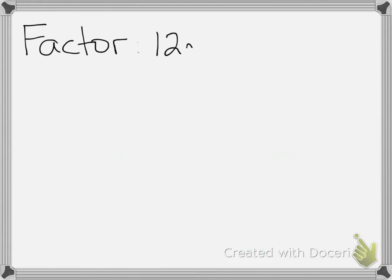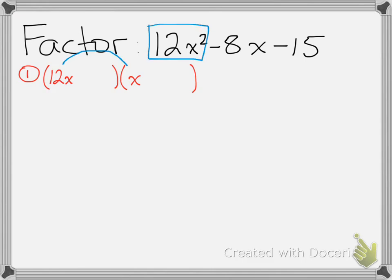So, for us to factor something like this, the way that we should approach factoring complex trinomials is we know that I need to break it into two factors. And I know that the first two things need to multiply to 12x squared. So, that times that has to give me 12x squared. That's not the only option. It might be 6x times 2x, it might be 3x times 4x, but this is an option.